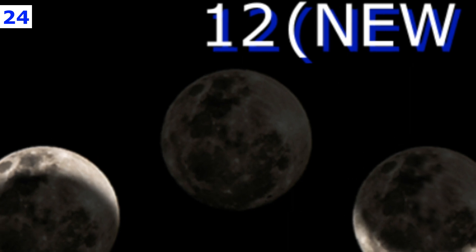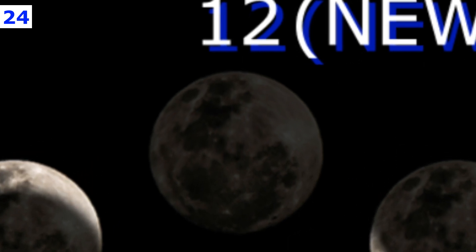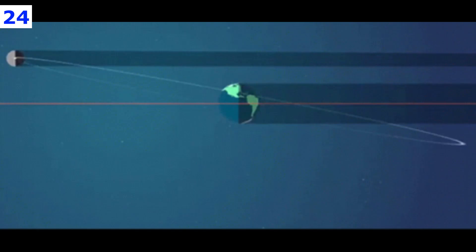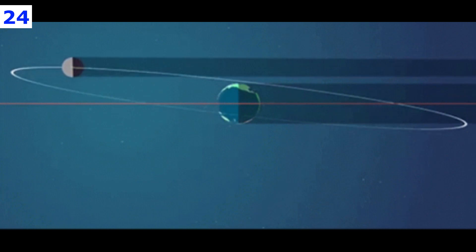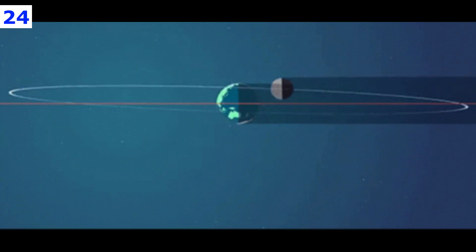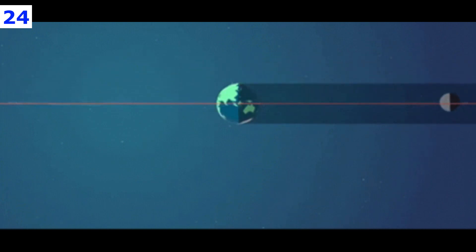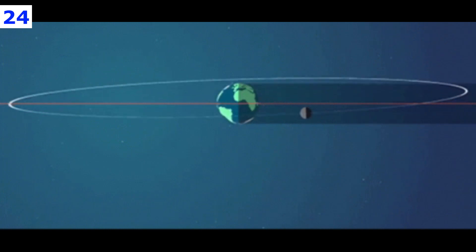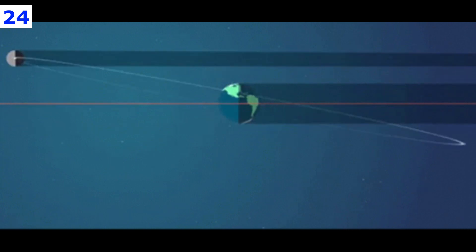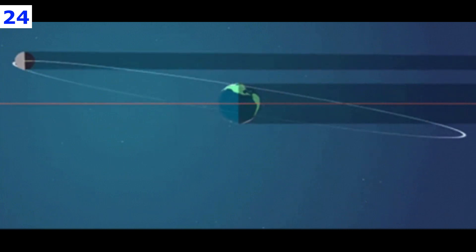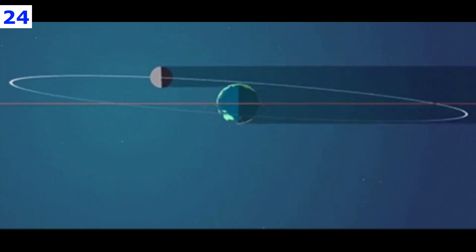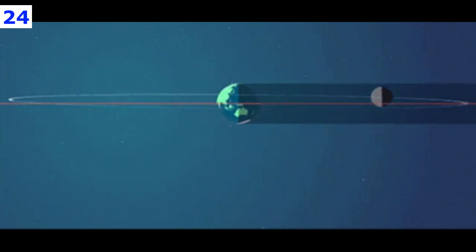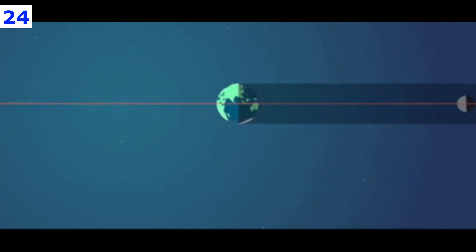A new moon occurs when the moon is at its closest point to the sun in its orbit around us. From our perspective it is invisible, because the side of the moon illuminated by the sun faces directly away from us. This means there is no moonlight reflected to us for us to observe.